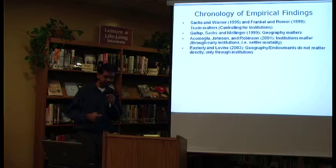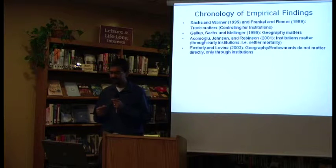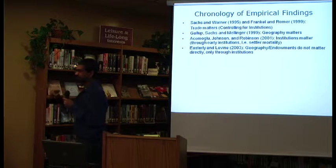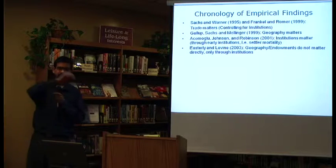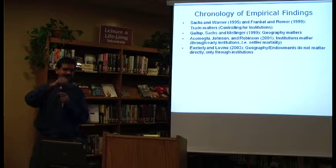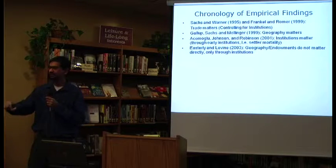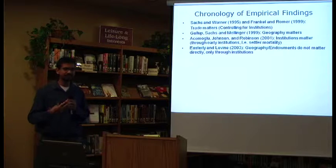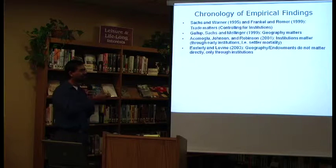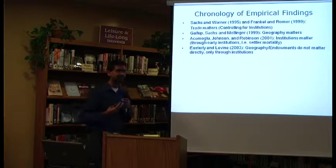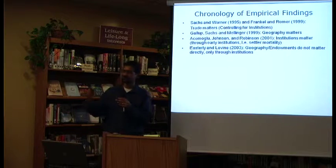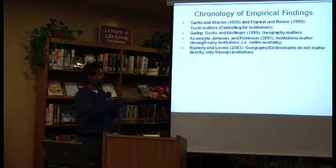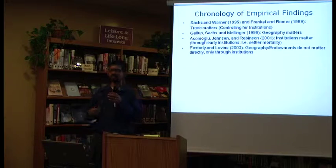Then Easterly and Levine revisited this debate, looking at endowments — the climatic conditions of a country. Endowments do not affect income levels, but endowments can affect income levels, giving us causation. They control for institutions and trade, and find that geography as captured by natural resource endowments dominates the three variables — so geography matters for development. So again, we thought we had a resolution, and again we are thrown off by researchers saying geography matters.